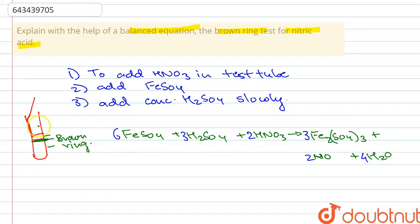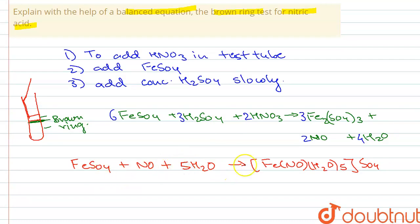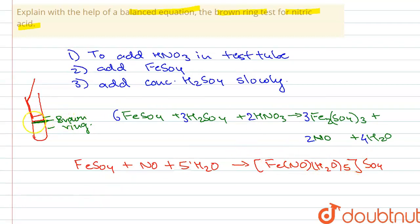When H2SO4 is added and all three solutions react, a brown ring is formed. The FeSO4 reacts with the nitric oxide released by that reaction, along with water, to give the complex [Fe(NO)(H2O)5]SO4. This complex is called hydrated nitrosoferrous sulfate, and it is what forms the brown ring.